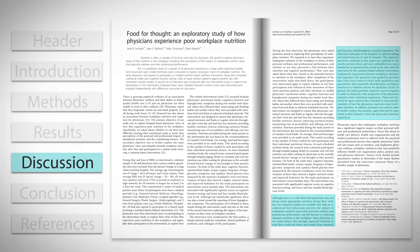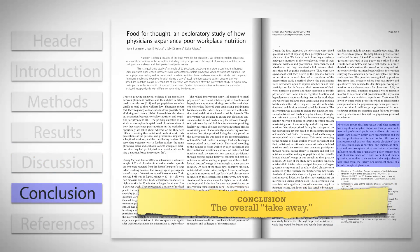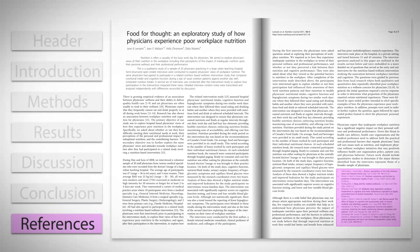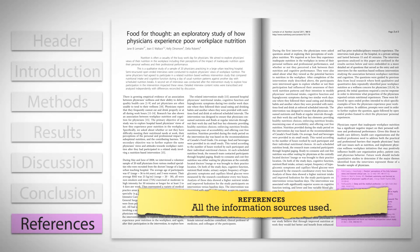Sixth is the conclusion, which recaps the article and includes the overall take-away from the article. Seventh and last are the references. In many research articles, this section is like the works cited page in student essays — it is a list of all the information sources used during the study.